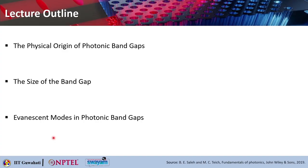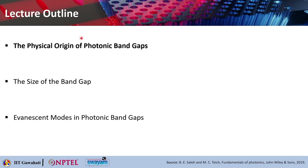Here is the lecture outline. We will briefly look into the physical origin of photonic band gaps. We will discuss about the size of the band gap — how you can make the band gap narrow or wide depending on your application requirement. We will also discuss about the evanescent modes in photonic band gaps which are not able to propagate into the photonic crystal. Let us first start with the physical origin of the photonic band gaps.